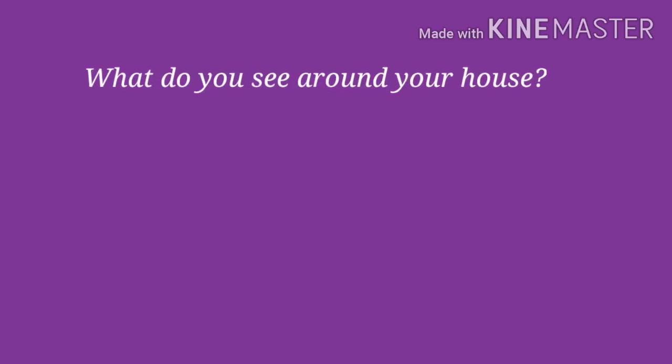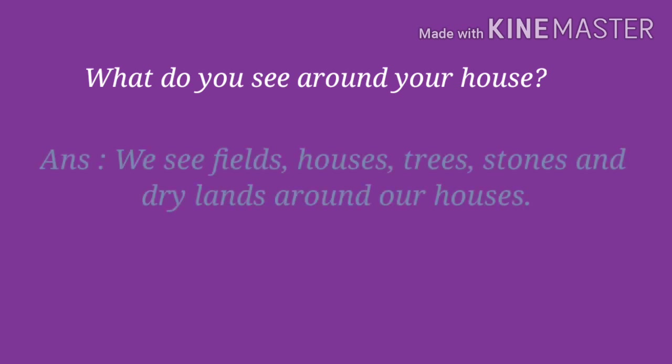What do you see around your house? We see fields, houses, trees, stones and dry lands around our houses. We see more things like this on our earth: hills, forests, fields, sea, seashore and dry land.